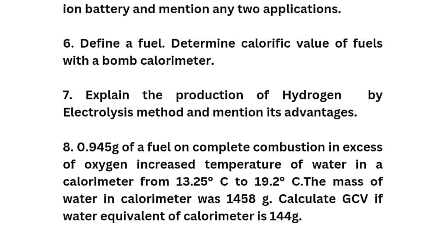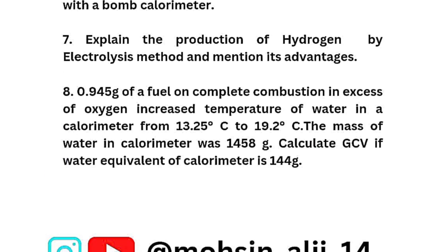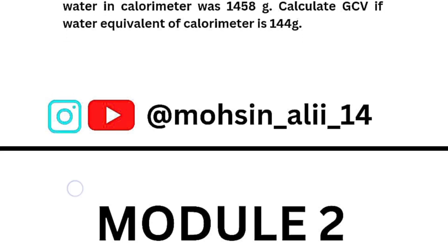Seventh: Explain the production of hydrogen by electrolysis method and mention its advantages. Last numerical: 0.945 grams of fuel on complete combustion in excess of oxygen increases the temperature of water in a calorimeter from 13.25°C to 19.2°C. The mass of water in the calorimeter was 1458 grams. Calculate GCV if the water equivalent of the calorimeter is 144 grams. Go through similar varieties of numericals if you want to score more than 95 marks.